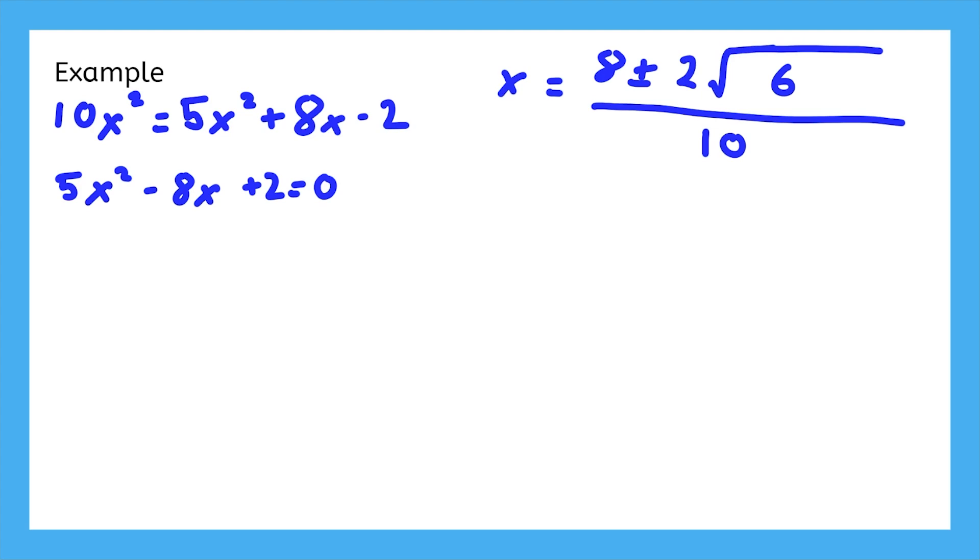Now, neither term on top is divisible by 10, but we can get creative with our simplifying. Each term is divisible by 2. 2 times 4, 2 times the square root of 6, and 2 times 5. So, we can say that by dividing by 2, we're cutting everything on top in half.